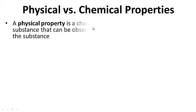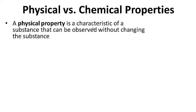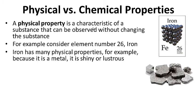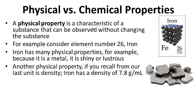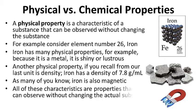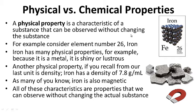Physical versus chemical properties. A physical property is a characteristic of a substance that can be observed without changing the substance. For example, consider iron — element number 26. Iron has many physical properties: because it's a metal, it's shiny or lustrous. Another physical property, if you recall from our last unit, is density — iron has a density of 7.8 grams per milliliter. Iron is also magnetic. All of these characteristics are properties we can observe without changing the actual substance; the chemistry is not changed.